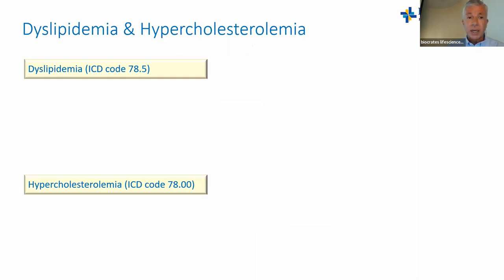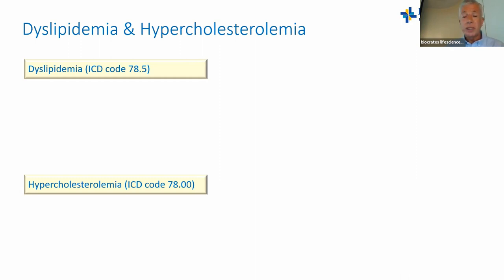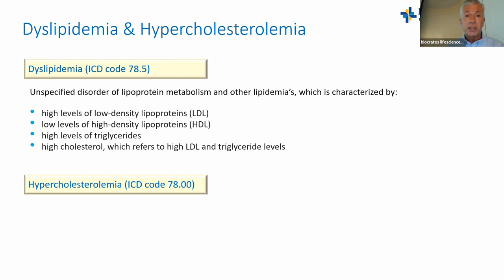As a quick introduction: dyslipidemia and hypercholesterolemia are disorders classified by ICD codes from the World Health Organization. Dyslipidemia is classified as an unspecified disorder of lipoprotein metabolism — covering high LDL, low HDL, high triglycerides, and high cholesterol.